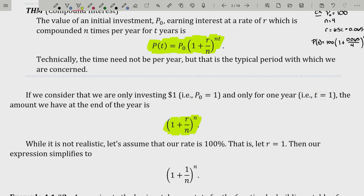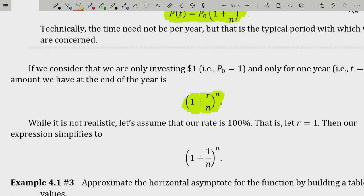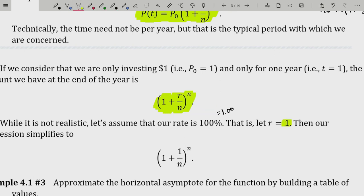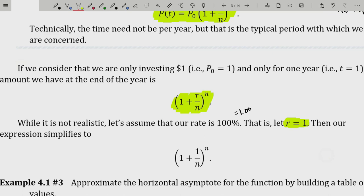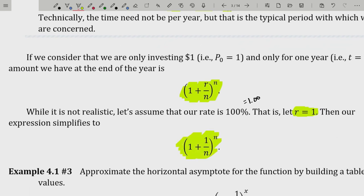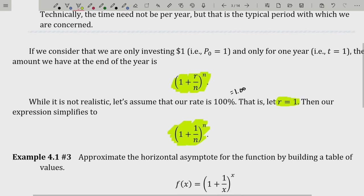Let's assume our rate is 100%, which as a decimal is 1.00, so r = 1. Then our expression simplifies to (1 + 1/n)^n. Remember, this is $1 invested for one year, compounding n times over that year at a 100% rate. I would love to get 100% back every year—that would be rad! But this awesomeness actually has something to do with nature.